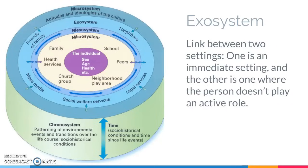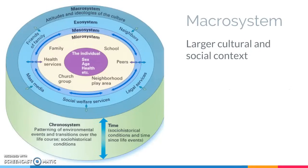And finally we have your macrosystem, which is the larger social and cultural context. So this can be American culture, but of course that's not one monolithic culture. We can also talk about the culture of a religious group, or military culture, or the culture of very urban versus rural areas. We can also look at broad social contexts such as the country's political climate.